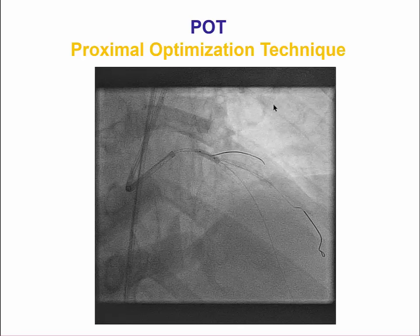After the second KISS, a very important step is the so-called POT, or proximal optimization technique, in which a larger balloon — in this particular case a 3.0 mm balloon — was inflated proximal to the bifurcation to ensure that the proximal part of the main vessel stent is well expanded and well apposed to the main vessel.